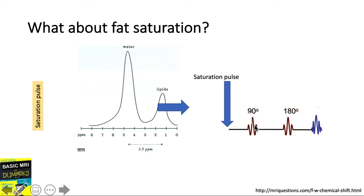By the time we give the 90 degree excitatory pulse, the fat protons are already saturated and will not contribute to the final image because we exploit the different resonant frequencies of fat and water. Fat sat is what we refer to as frequency selective fat saturation.